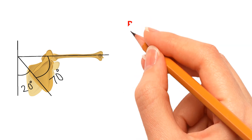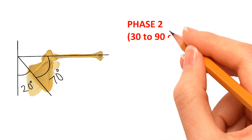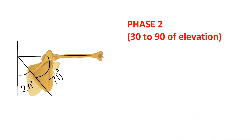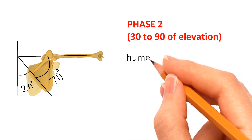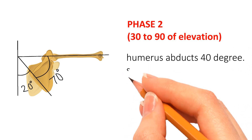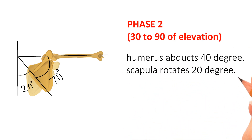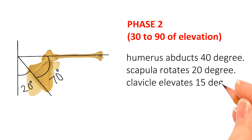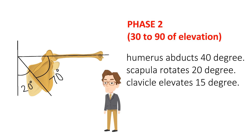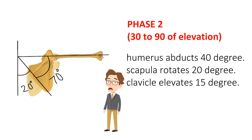In Phase 2, from 30 to 90 degrees of elevation, the humerus abducts 40 degrees, the scapula rotates 20 degrees, and the clavicle elevates 15 degrees. You might think that 40 plus 20 equals only 60 degrees — don't be confused, as we already covered 30 degrees of elevation in Phase 1.